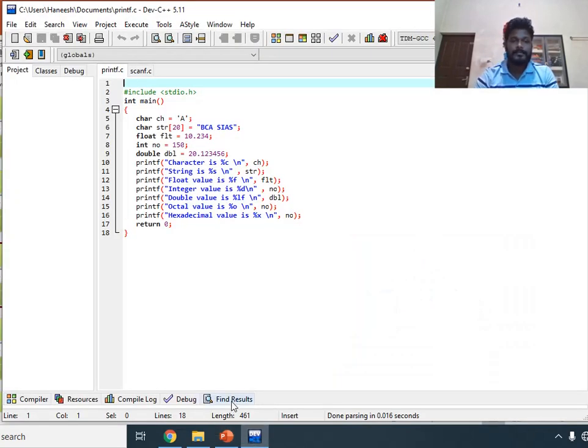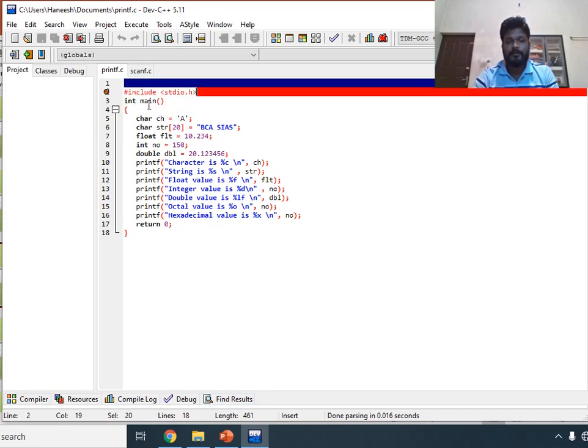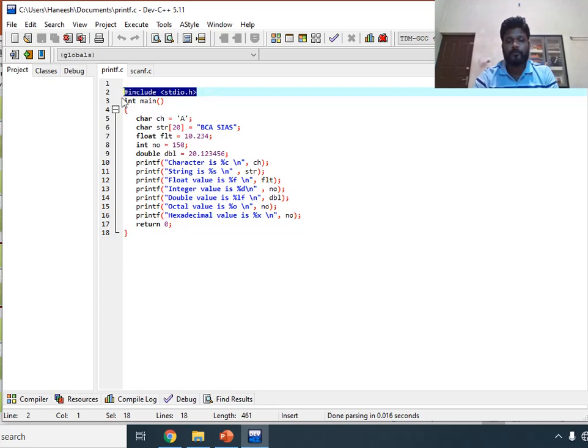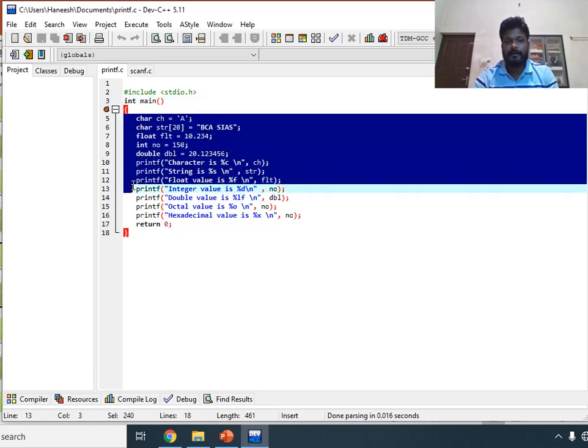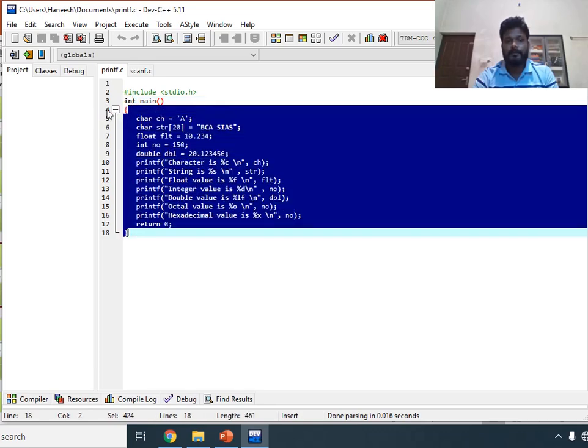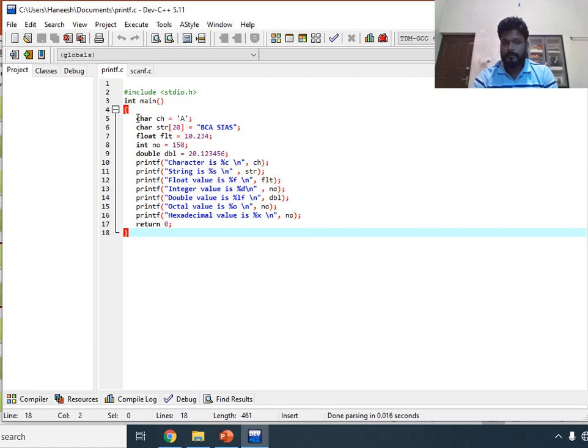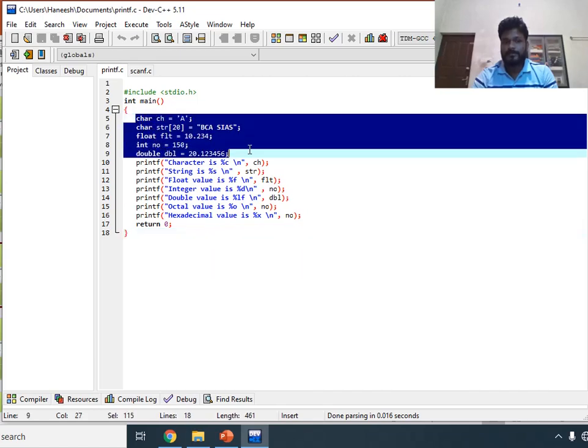Here is an example for printf functions. In this example we have the header file stdio.h for printf function. Then in the main function we have declared all the values. These are variable declaration parts.